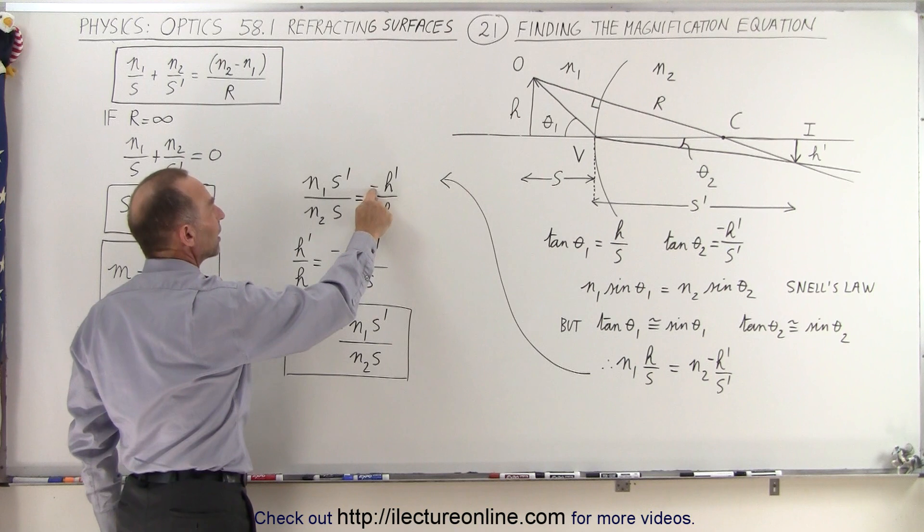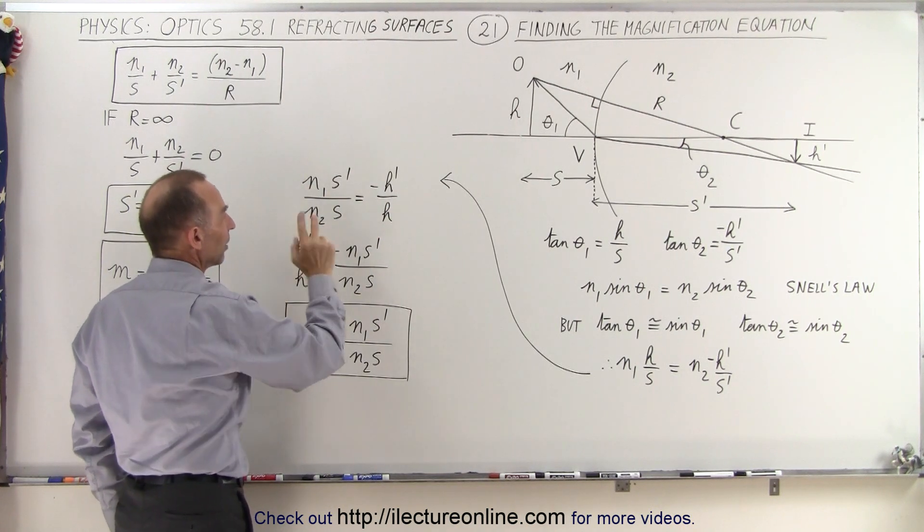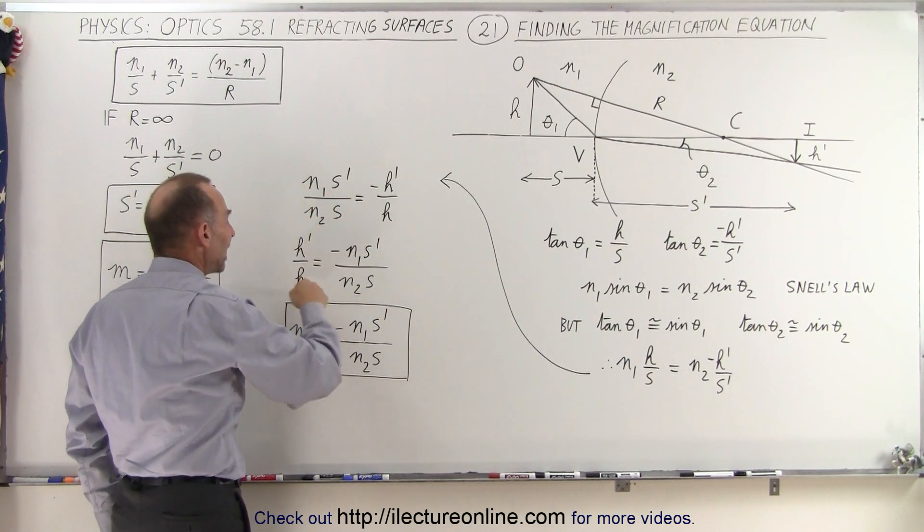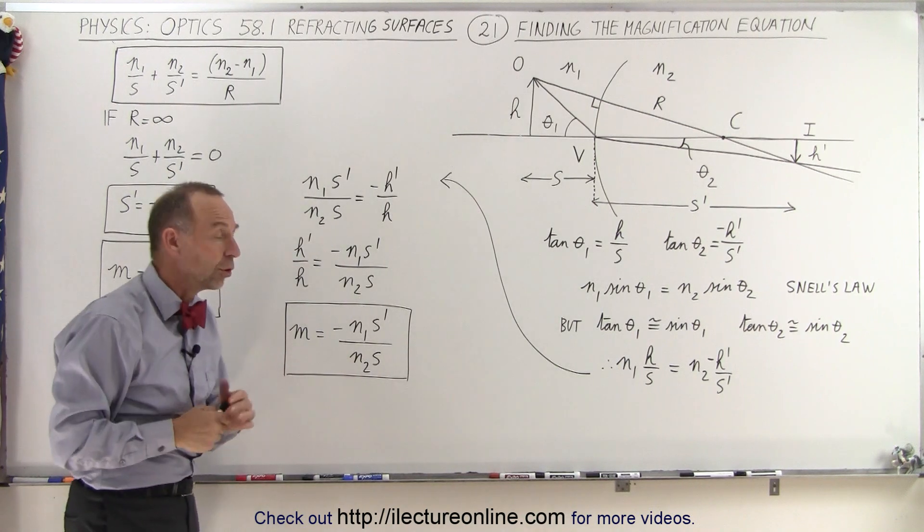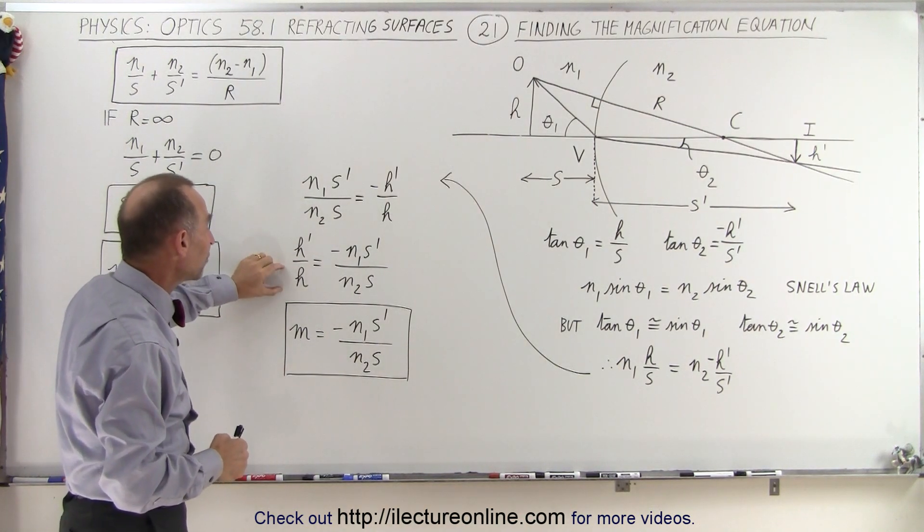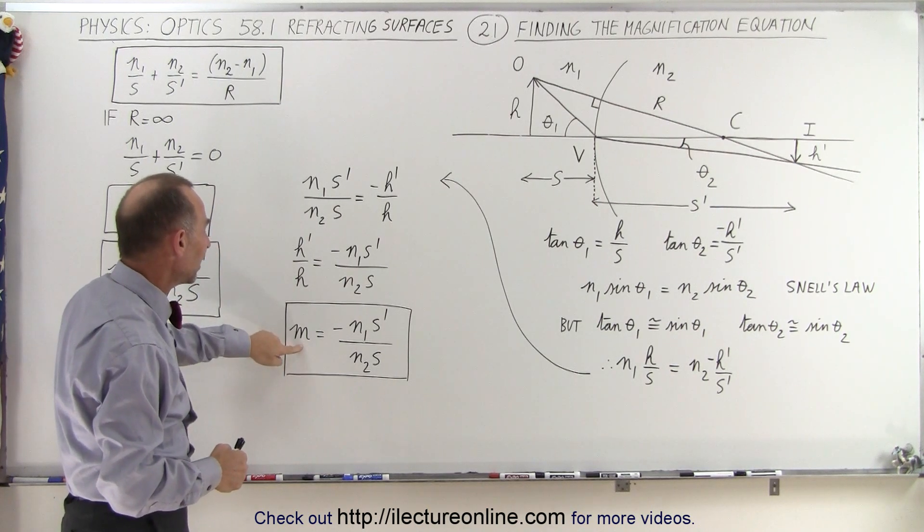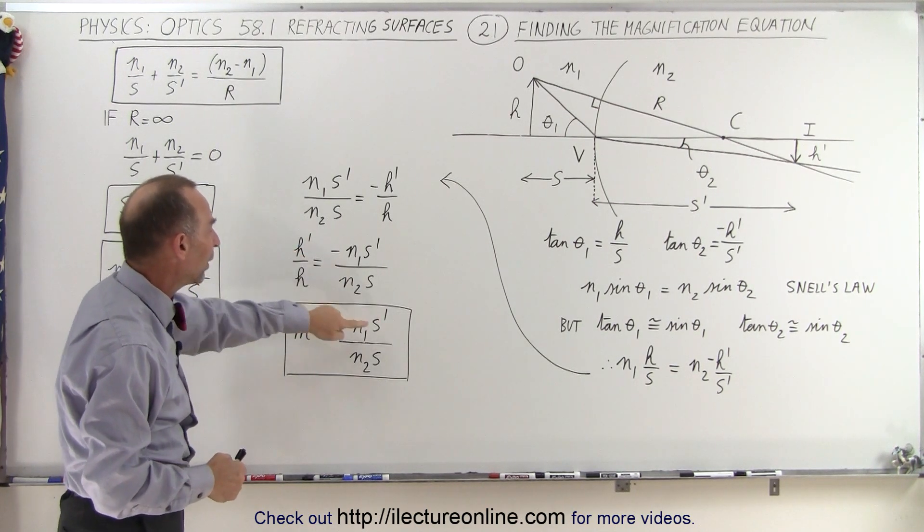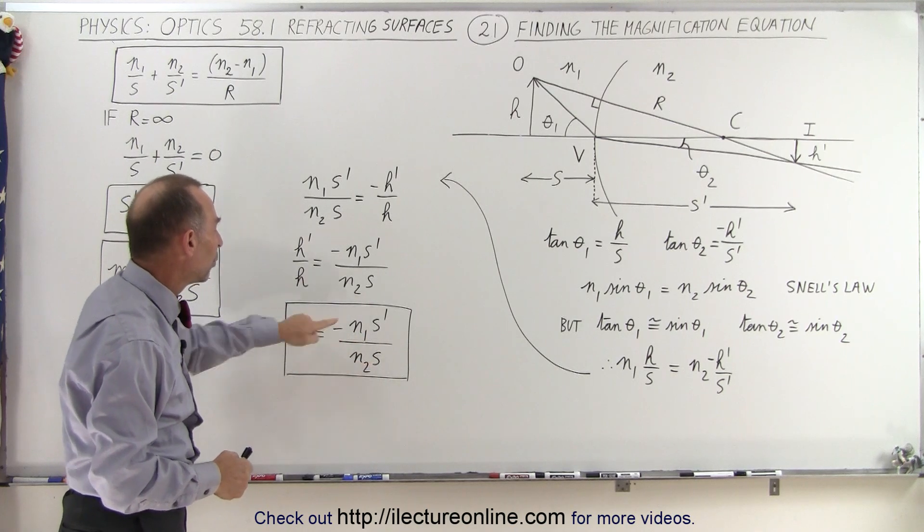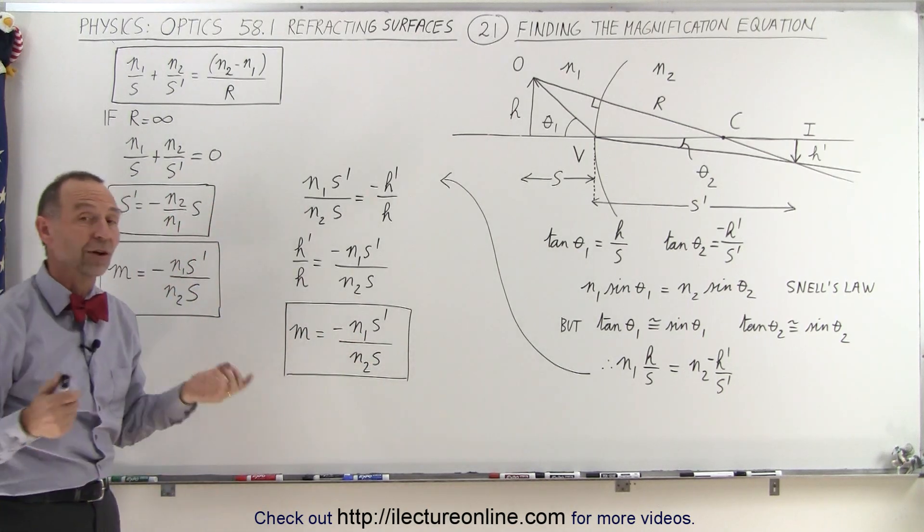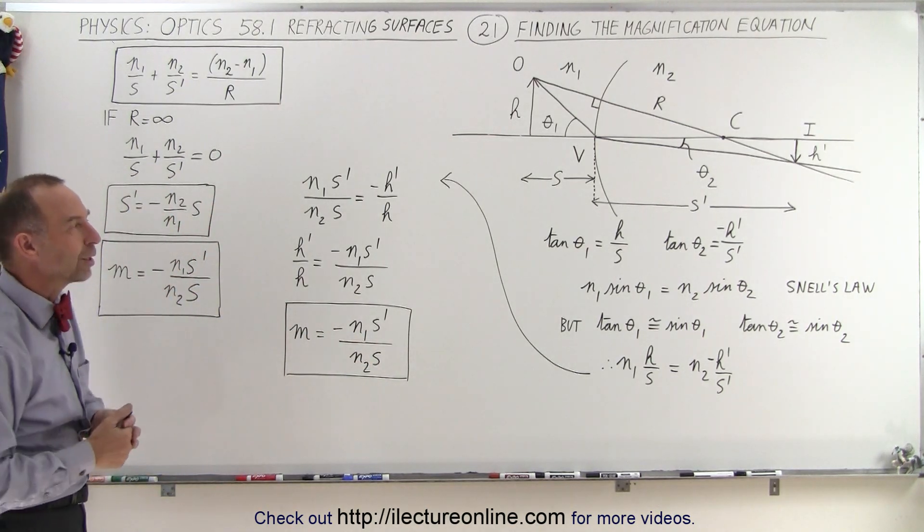Turning the equation around, we have H prime over H, which is the ratio of the height of the image versus the height of the object, and that of course is known as the magnification. So therefore the magnification is equal to negative N1S prime over N2S, which is the equation that we've been using all along, but now you know where the equation came from.